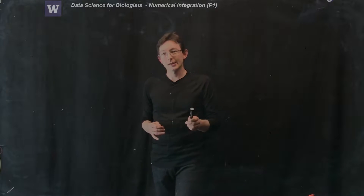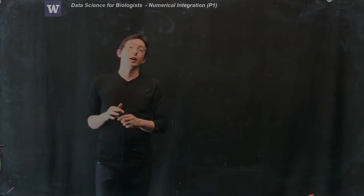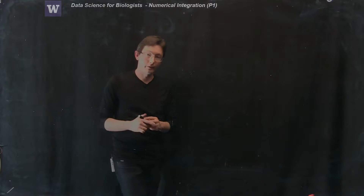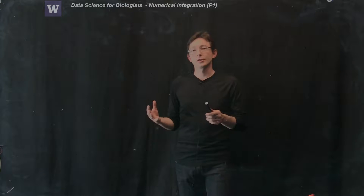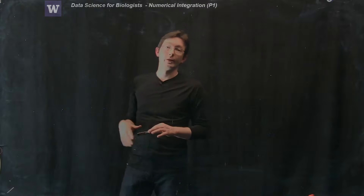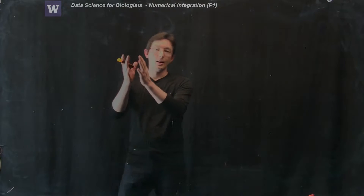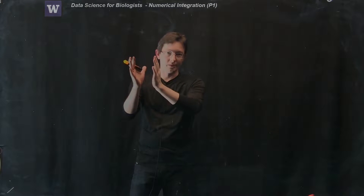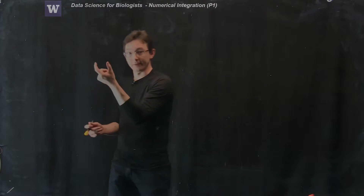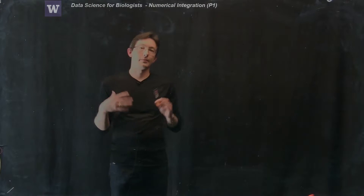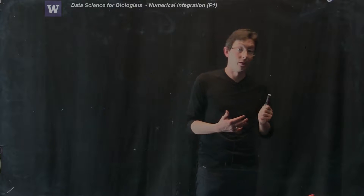Welcome back. Last time we saw how to do numerical differentiation of a function f on a discrete grid. We essentially took our normal definition of a derivative from calculus and instead of taking the limit as delta t or delta x goes to zero, we used a finite delta t. And we saw how good this approximate derivative was.